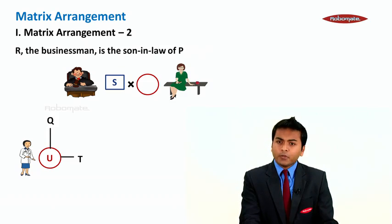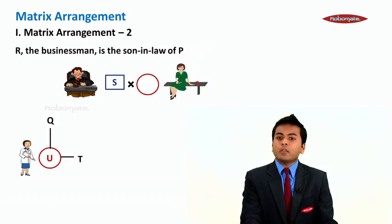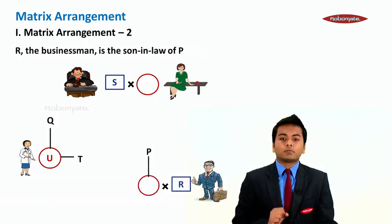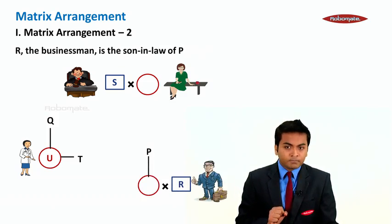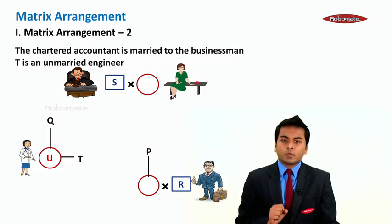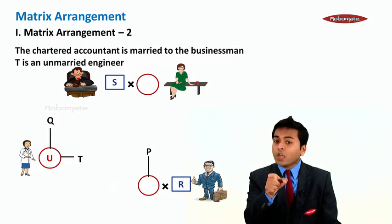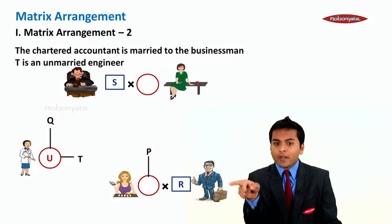The next statement: R the businessman is the son-in-law of P, which means R is married to P's daughter. Clear? The next statement: The chartered accountant is married to businessman, which means R's wife is chartered accountant and T is an unmarried engineer.